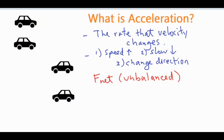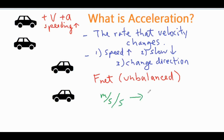If something is going forward with a positive velocity and has a positive acceleration, it's going to be speeding up. The reason is that if you have a positive velocity and you're adding a number to it every second, that positive velocity value increases. The unit for acceleration is meters per second per second, often written as meters per second squared — meaning how many meters per second you're adding or subtracting per second.